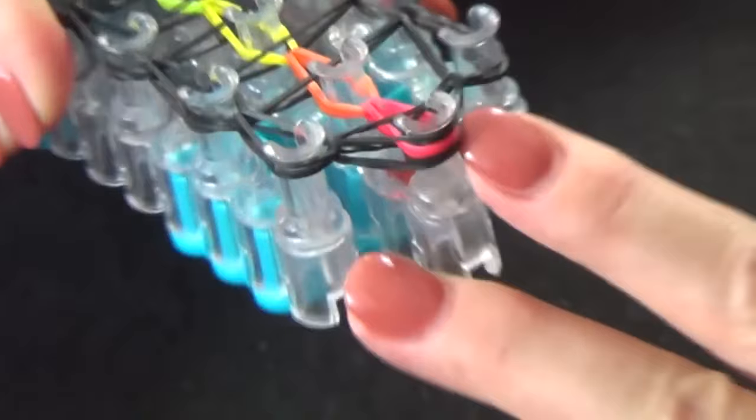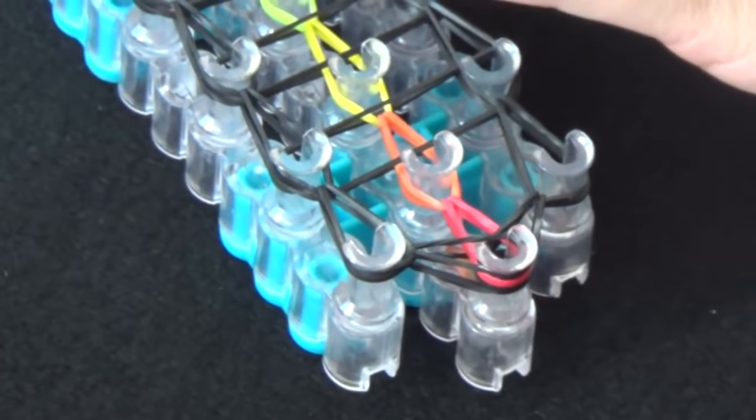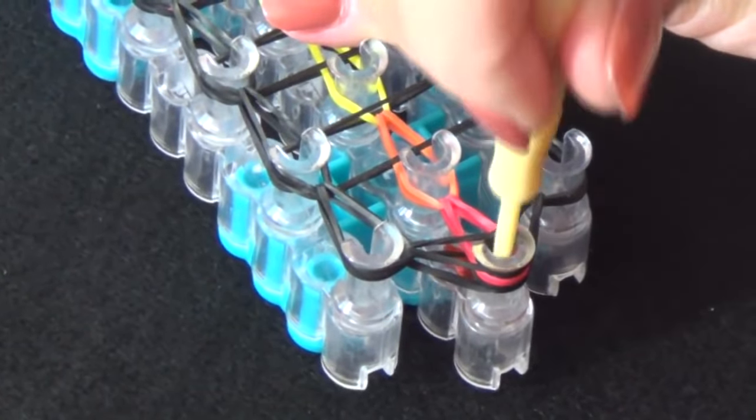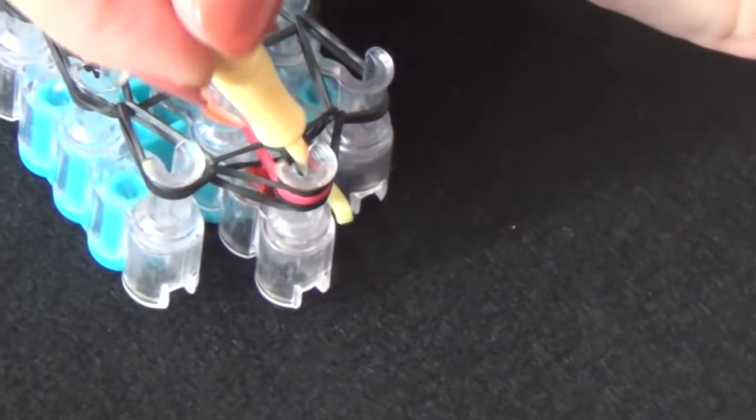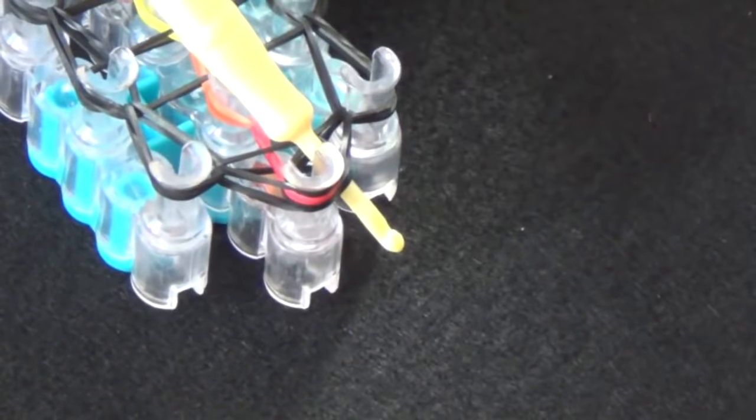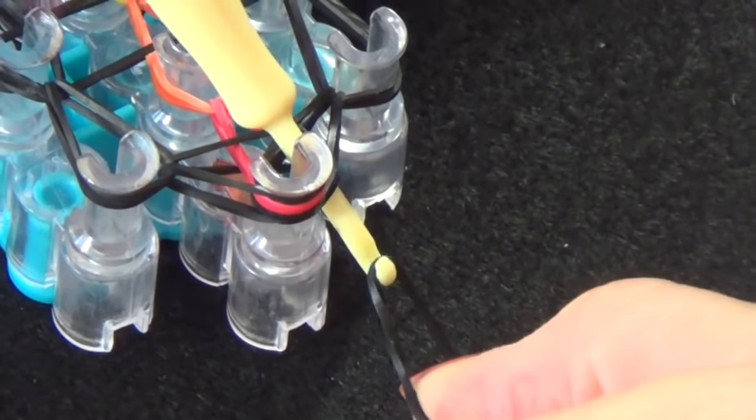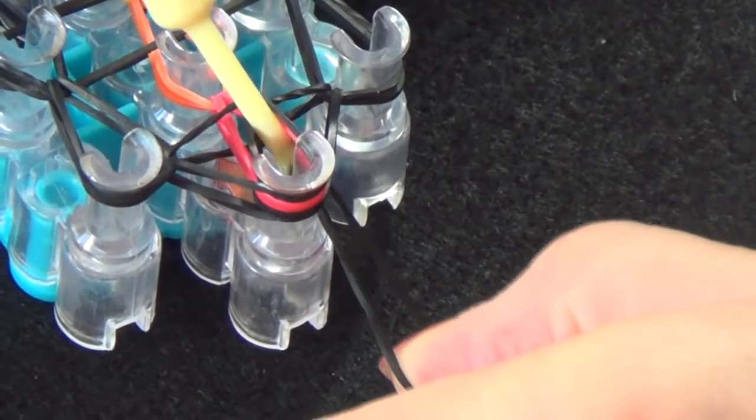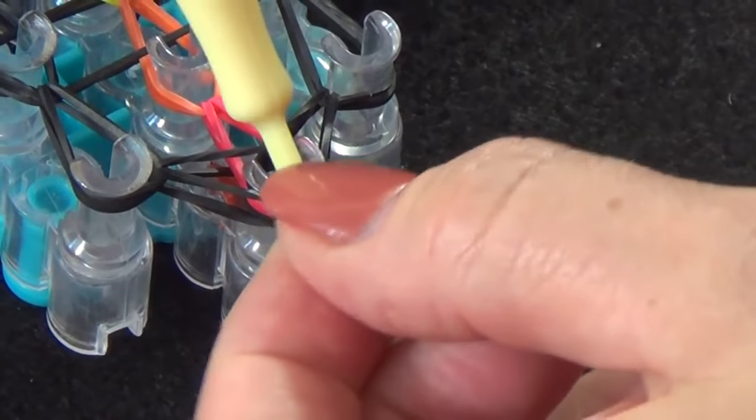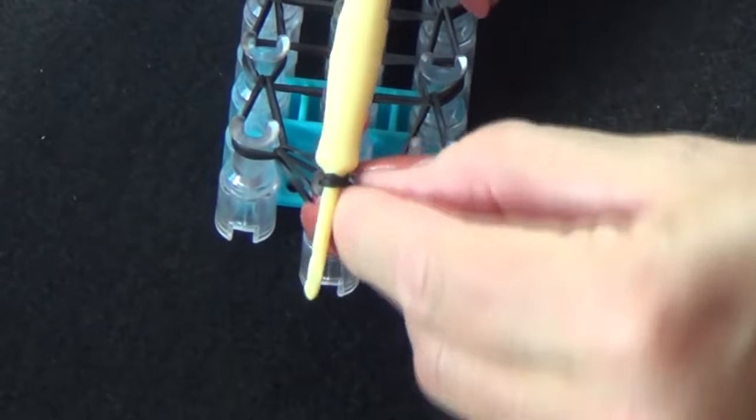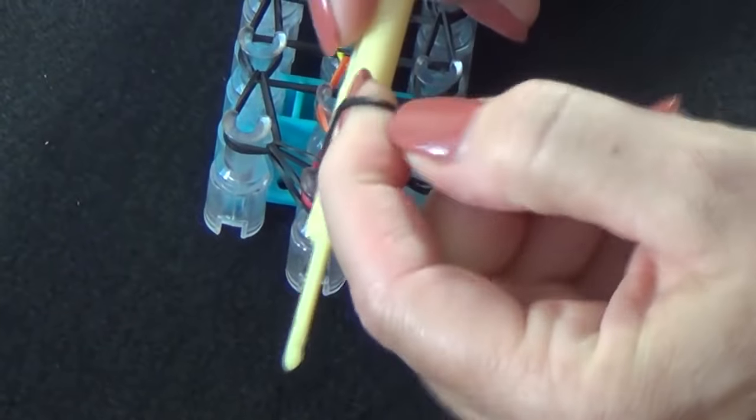You want to make sure you squeeze all these bands up to the top of that pin. You'll slide your hook down in the channel and tilt it outward. You'll grab a black band. Lay it over the point of your hook. Pull it back.